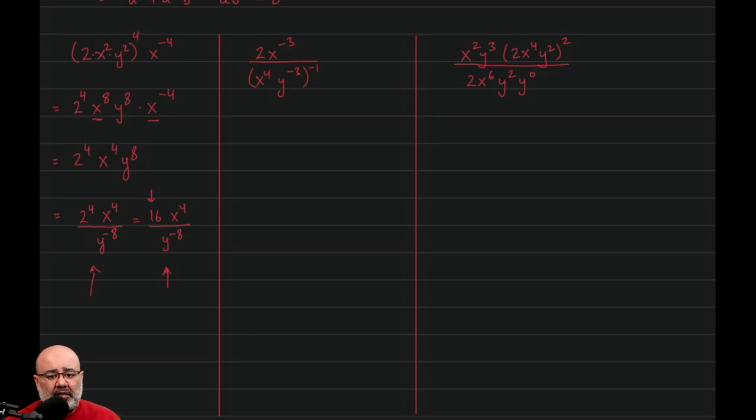For the next one, we have a couple of different clever ways of doing this. So one way is to use the product to a power property in the denominator. So basically, you could rewrite this as 2x to the negative 3 over, and now we apply the negative 1 power to both the 4 and the negative 3, which would give us x to the negative 4, y to the positive 3.